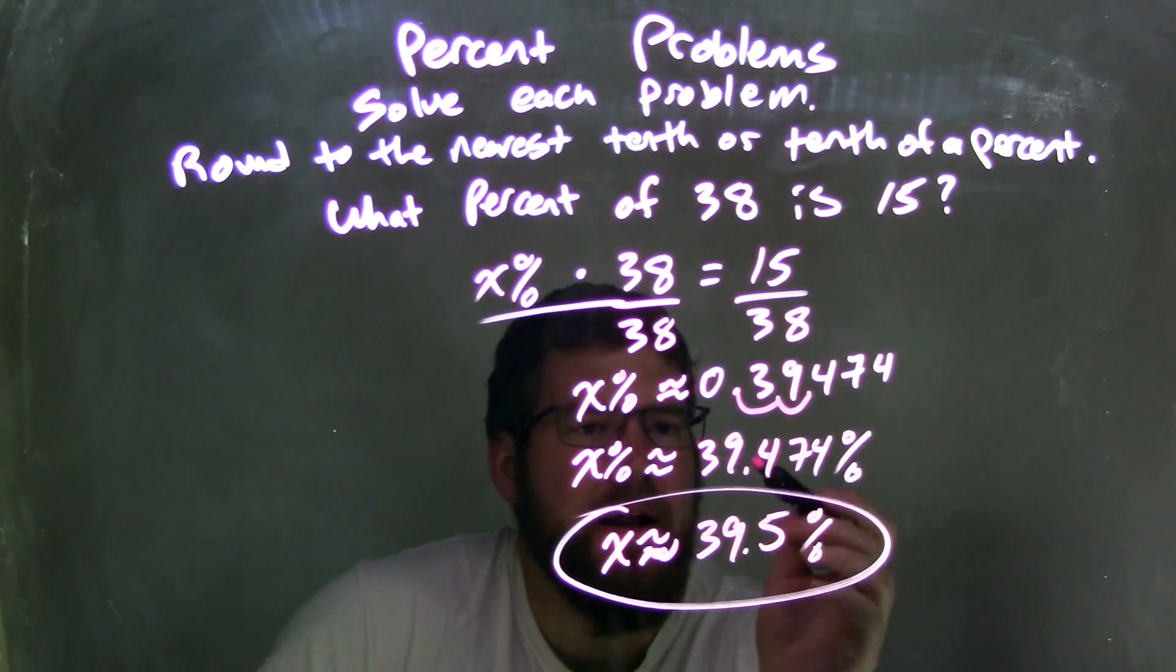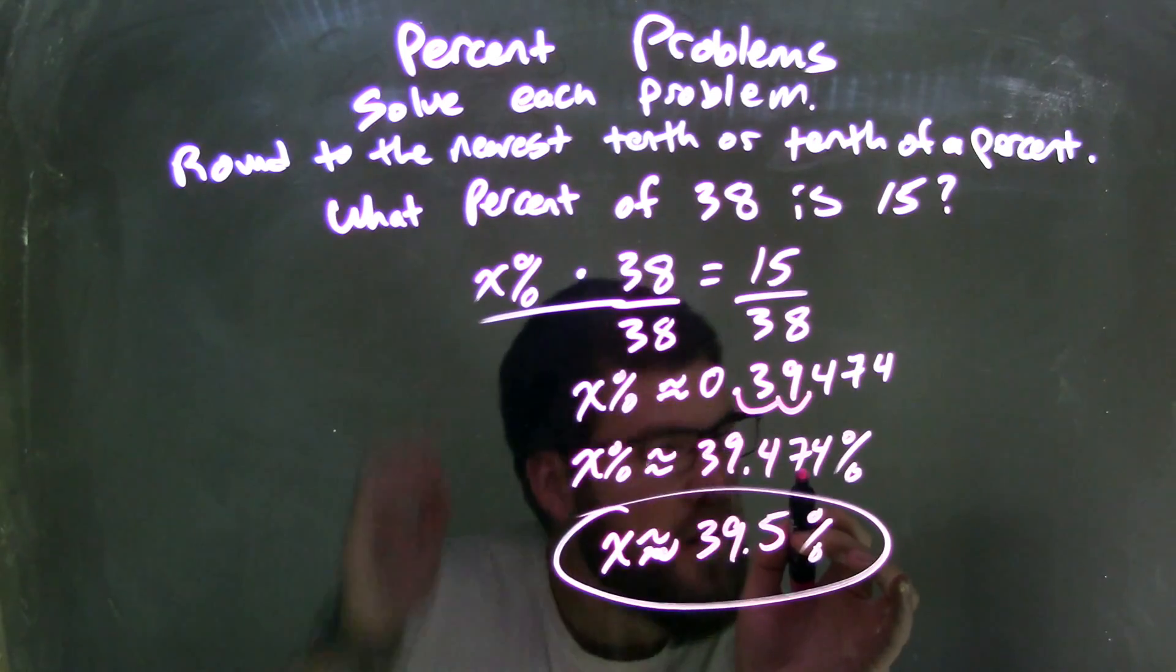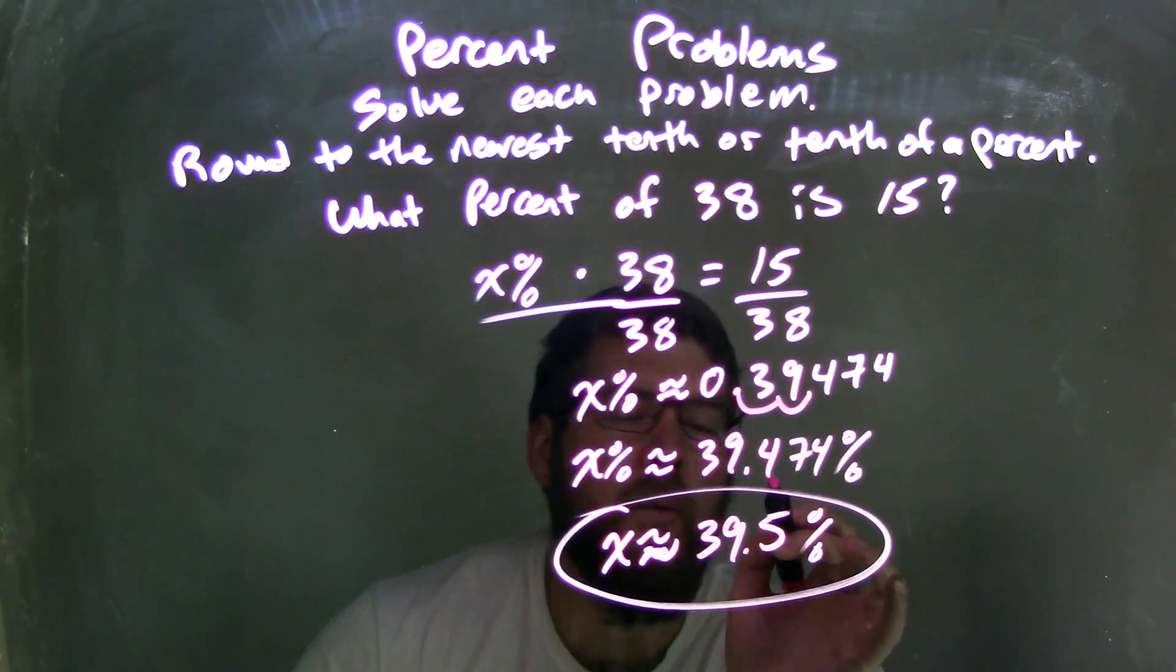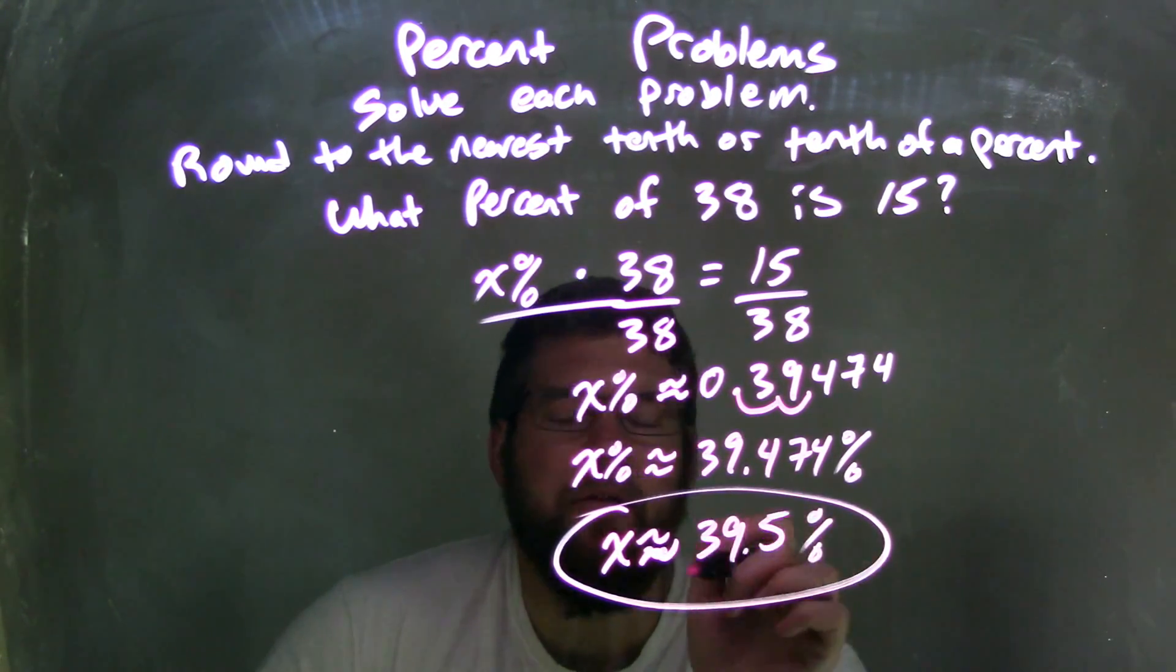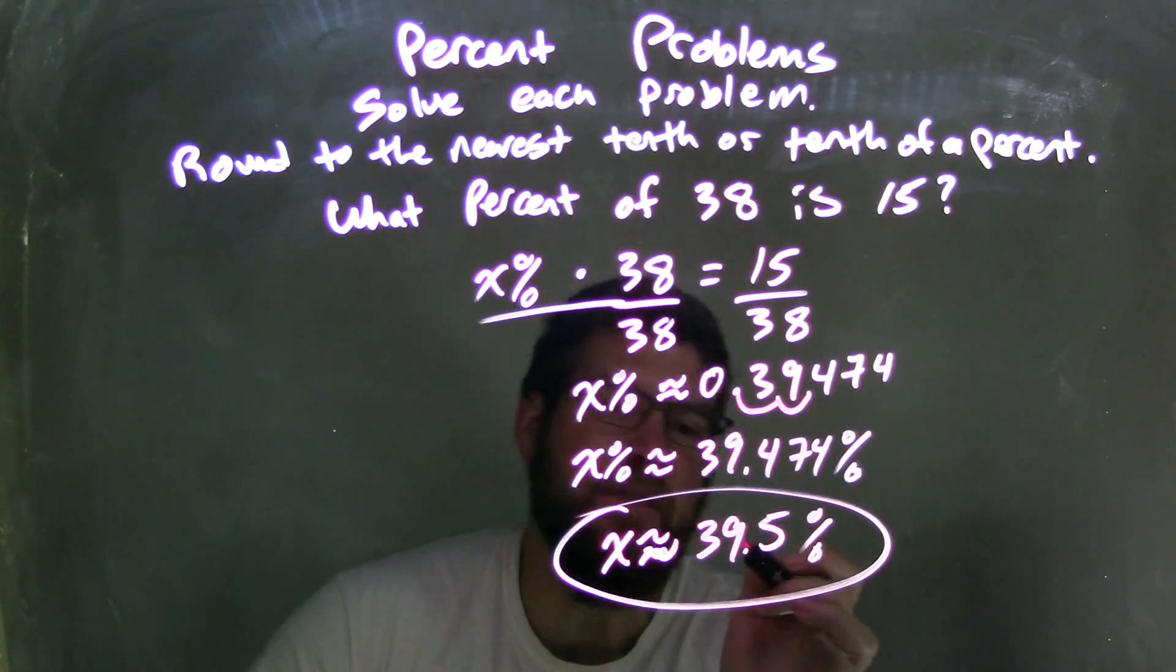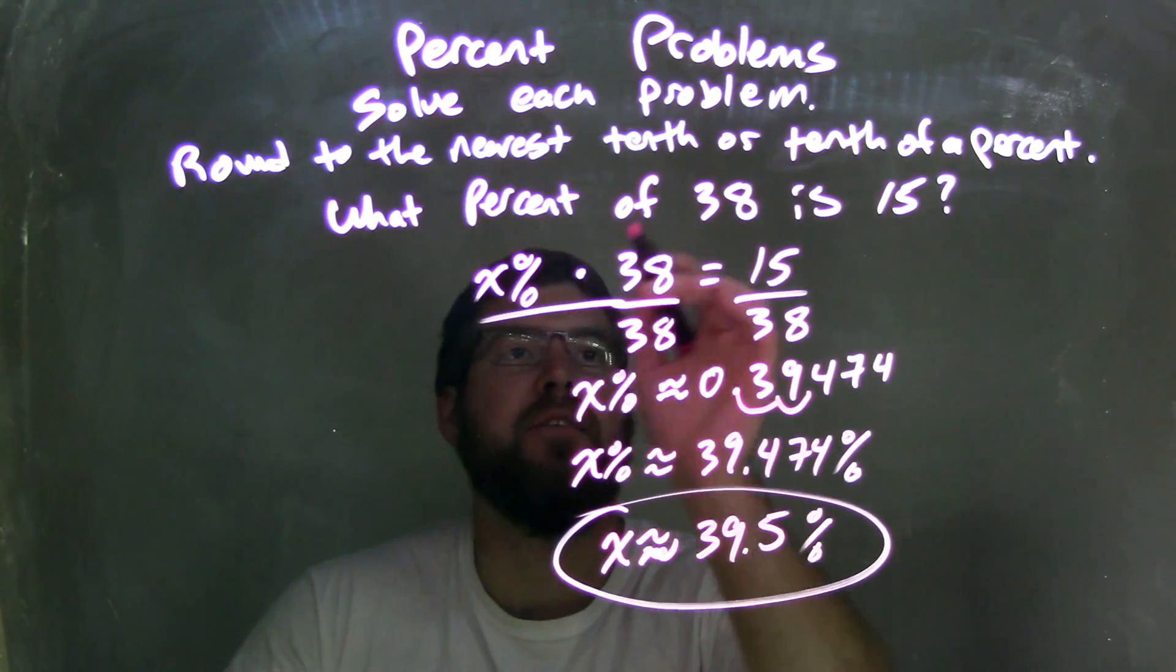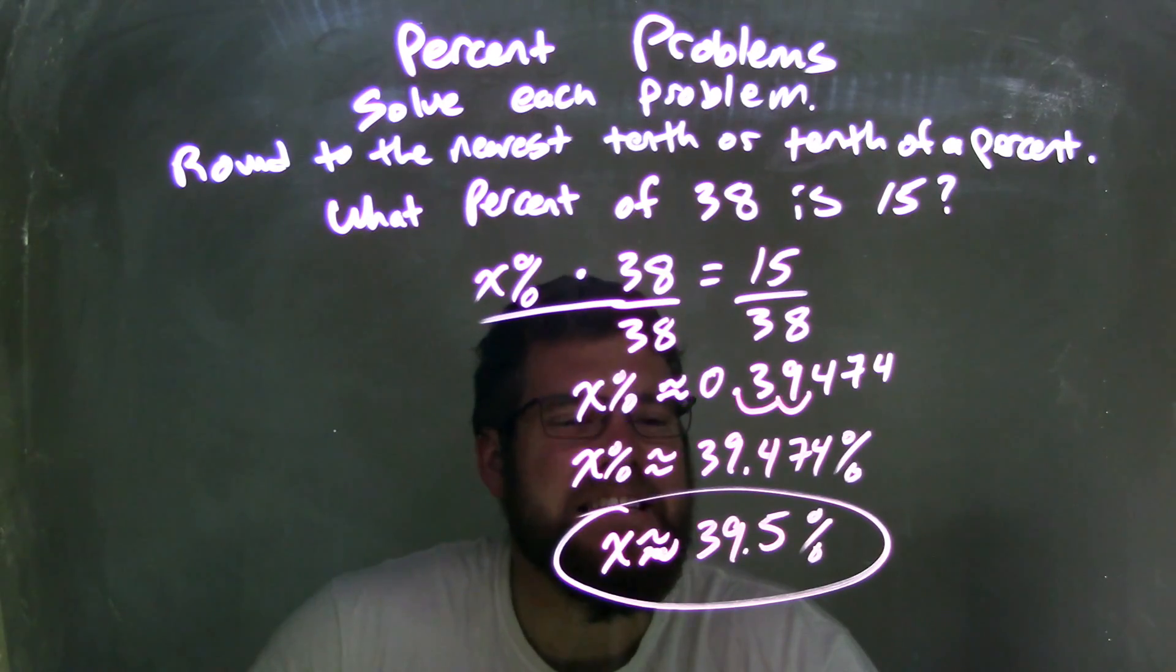Now, I had to round at 39.474% approximate. Looked at the 4. The 7 caused that 4 to rise up 1 unit, 1 unit, to a 5. And so our final answer here is answering the question: 39.5% of 38 is 15.